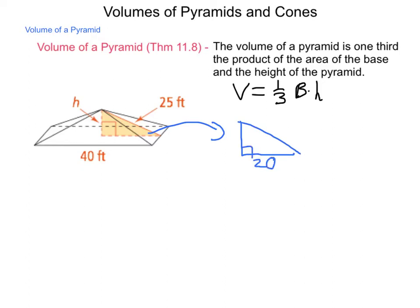20 across the base because the pyramid is 40 across from the midpoint out would be 20. 25 on the hypotenuse, using our Pythagorean theorem,